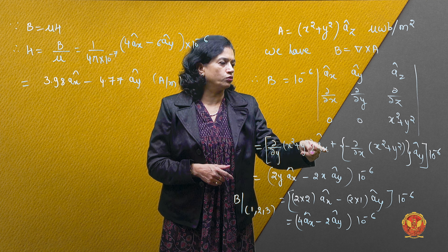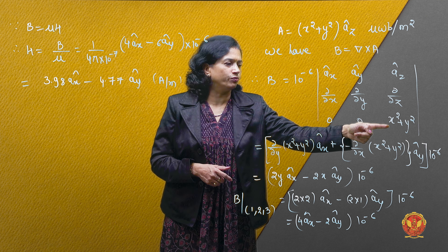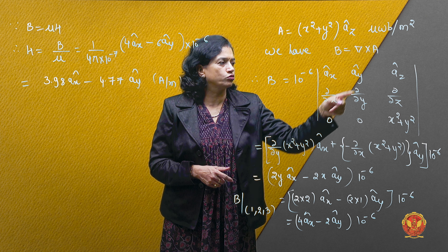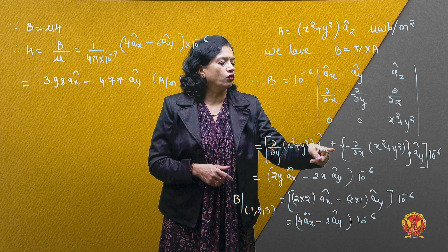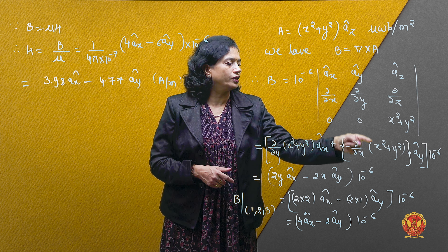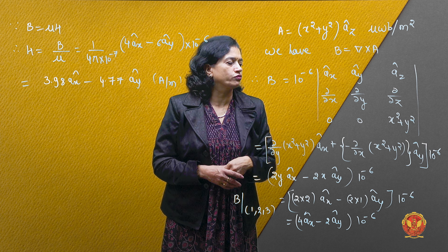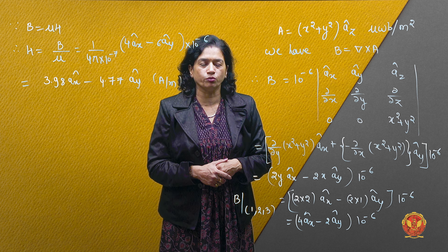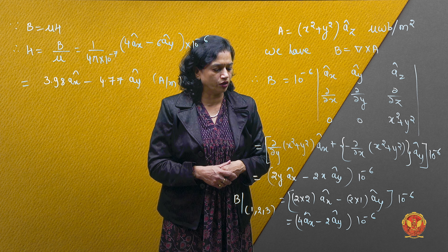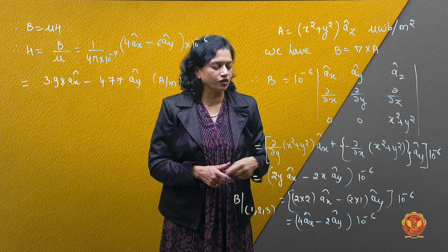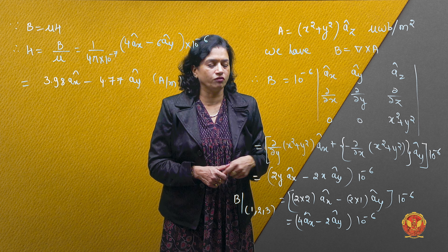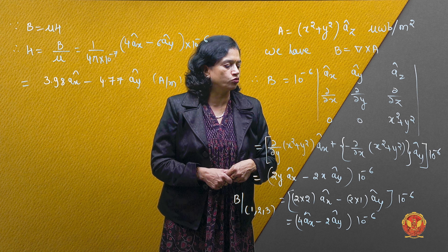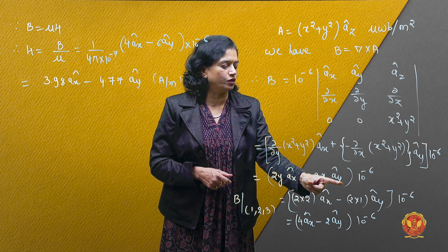Jab ham is determinant ko solve karengi to: del/del y of (x² + y²) into ax ho jayega, plus minus del/del x of (x² + y²) ay direction ka ho jayega, into 10 to the power minus 6. Jab isse derive karte hain to 2y ax mil raha hai aur minus 2x ay mil jayega.